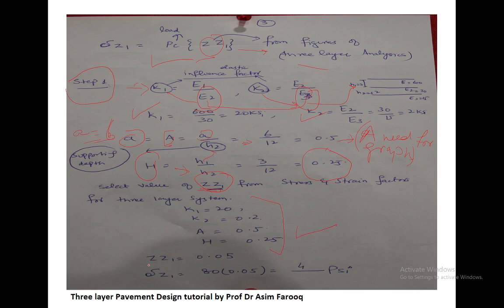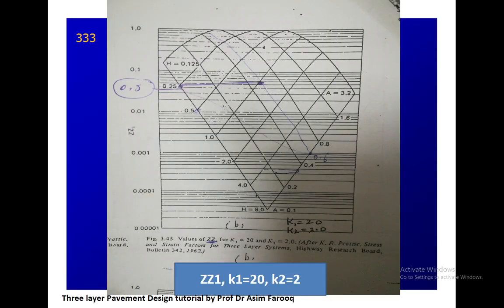The ZZ1 value from the chart is 0.05. We simply multiply sigma Z1 equals load times ZZ1, so sigma Z1 equals 80 psi times 0.05, which is almost 4 psi. The question still remains: how do we read the 0.05 value from the chart? Let's go to the next slide.